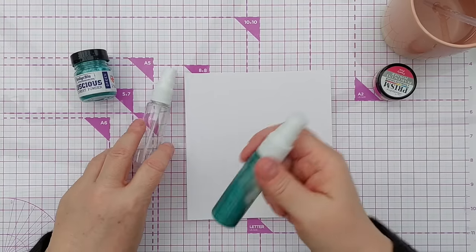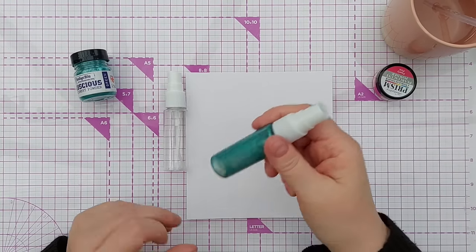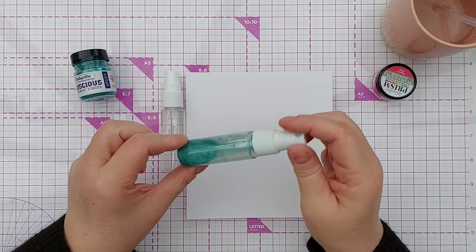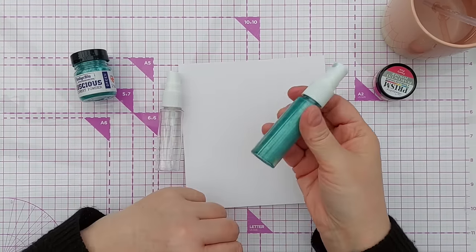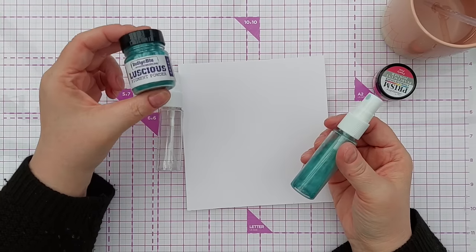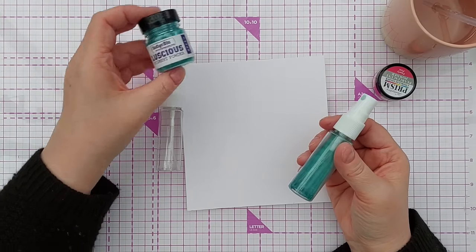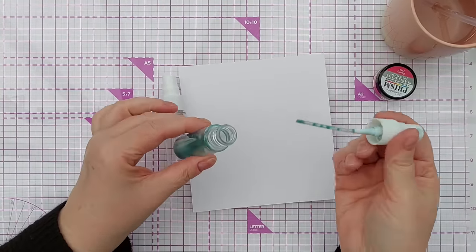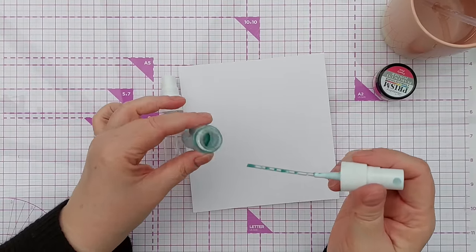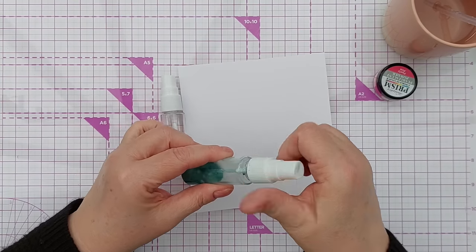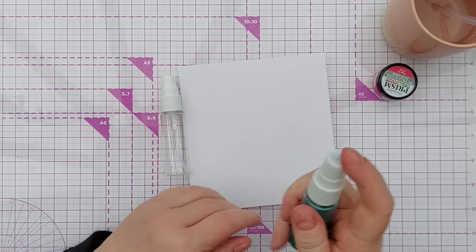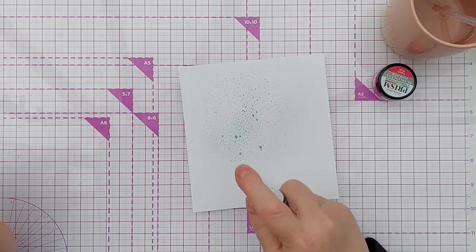You may have seen this before in my never going to buy these again video. This is a homemade shimmer spray I made using green luscious pigment powder. All I did was put some water in this travel sprayer and a good dollop of luscious powder, give it a good shake, and then spray it onto paper or card.